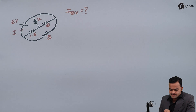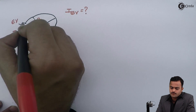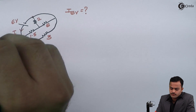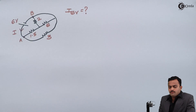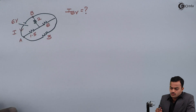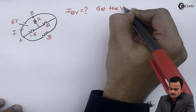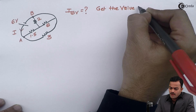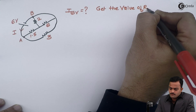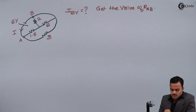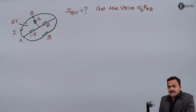The 6 volt battery is connected between two points A and B. So our job is to get the equivalent resistance between these two points — that is, the value of R_AB. That is the first objective. We have to use series-parallel concepts.